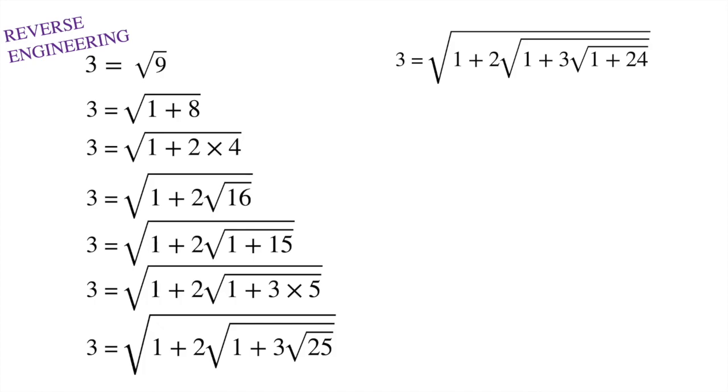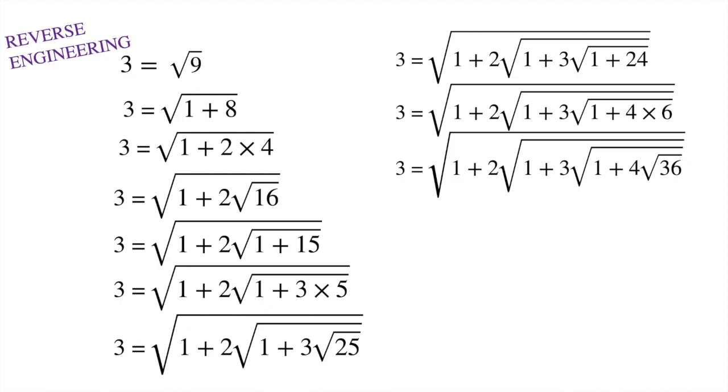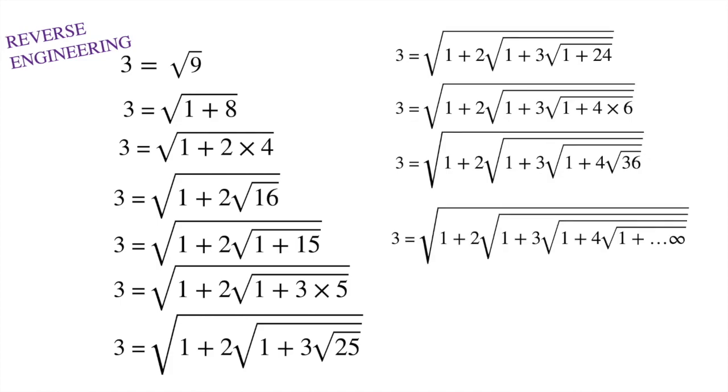Again following the same steps and writing twenty-four as four times six, they claim that this process keeps on going until infinity, and that's how our original equations answer comes out to be three.